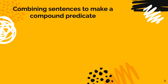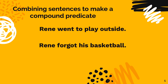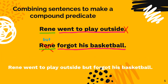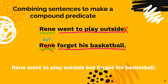Let's look at another example: 'René went to play outside' and 'René forgot his basketball.' Who are these sentences about? René. What did René do? He went to play outside and forgot his basketball. To form a sentence with a compound predicate, I do not want to repeat the subject. So I will eliminate the second René and the period after 'outside' and insert the conjunction 'but' instead, to make: 'René went to play outside but forgot his basketball.'